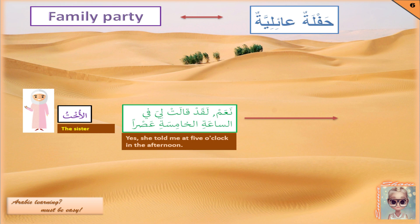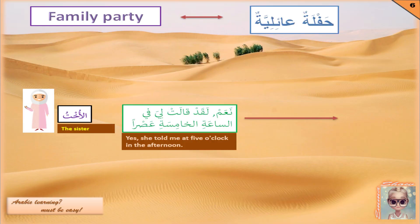الأخت answers: نعم لقد قالت لي في الساعة الخامسة عصرا. قالت is the conjugation of the verb 'say' in the past tense with 'she' — هي قالت means 'she said', أنا قلت means 'I said', أنت قلت means 'you said'. Arabs don't use personal pronouns except when necessary. في here means 'at', الساعة الخامسة means 'five o'clock', and عصرا means 'afternoon'. The full translation is: yes, she told me at five in the afternoon.